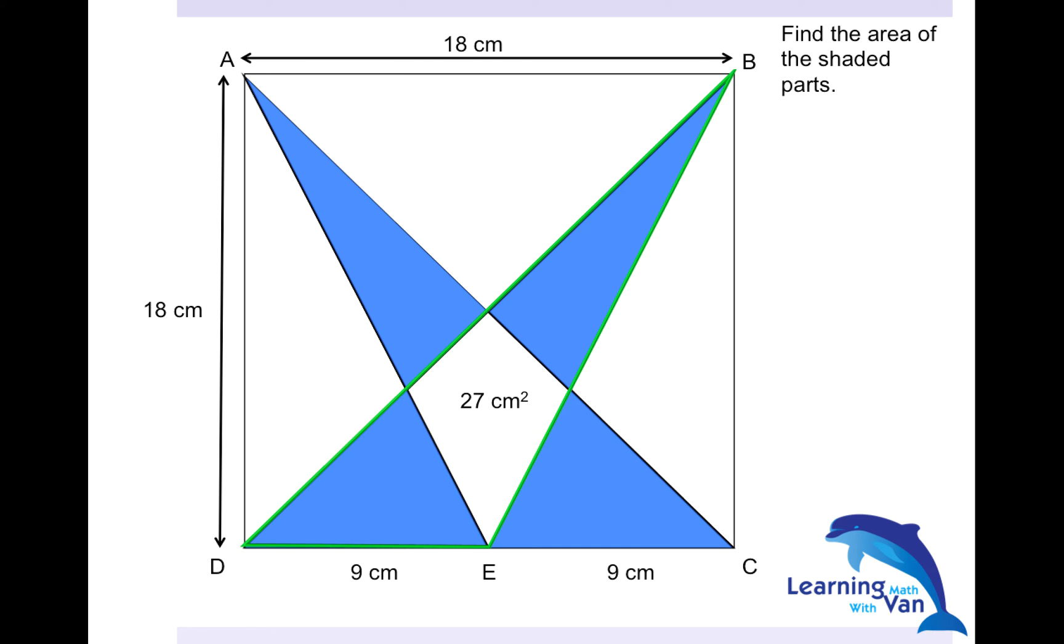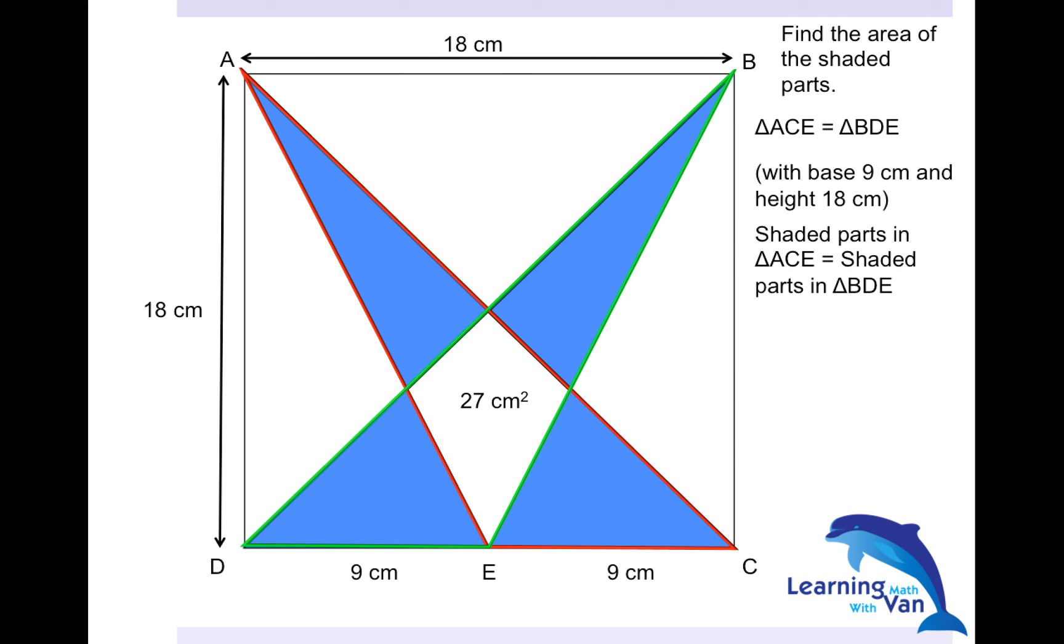Take a look at this green triangle and take a look at this red triangle. So basically, these two are identical. So you just take away whatever the 27 centimeters square in the two triangles, you get the same answer. So this is another way to work out. Green and the red are identical with base 9 centimeters and height 18. The shaded parts are the same. So you just take area of either triangle to be half times base times height, which is half times 9 times 18 equals to 81.